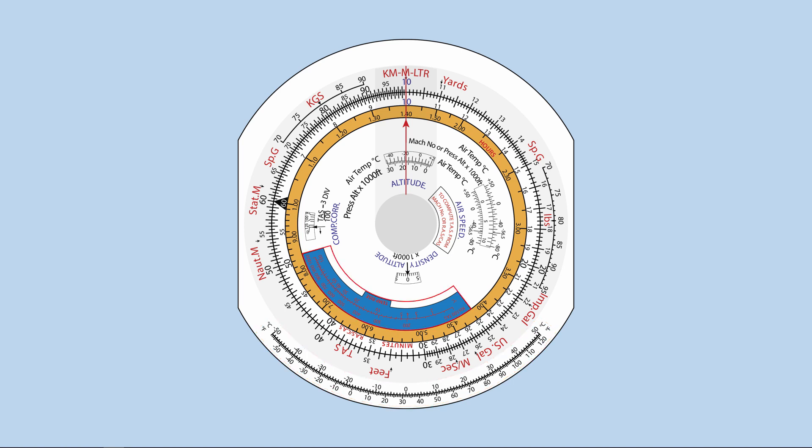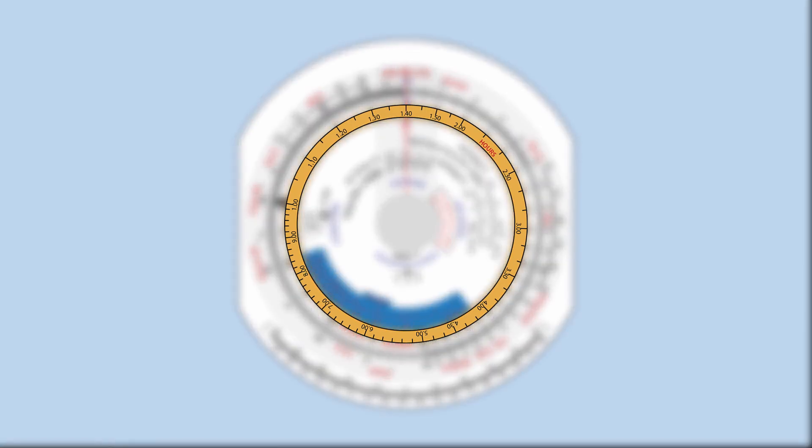Temperature rise scale. This scale is used to find out temperature RAM rise versus true airspeed. Minutes to hours and minutes scale. This circular yellow scale labeled hours in red, that lies within the inner circular slide rule scale, gives straight conversion between minutes on the inner slide rule scale and hours and minutes on the hours scale.